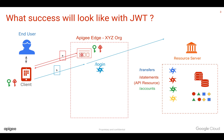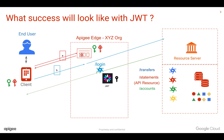The connection between Apigee and the backend server is secured using two-way SSL. When the resource server validates the credentials, Apigee can generate a JWT token, which is a signed token with a secret key. This token is then sent back to the client.